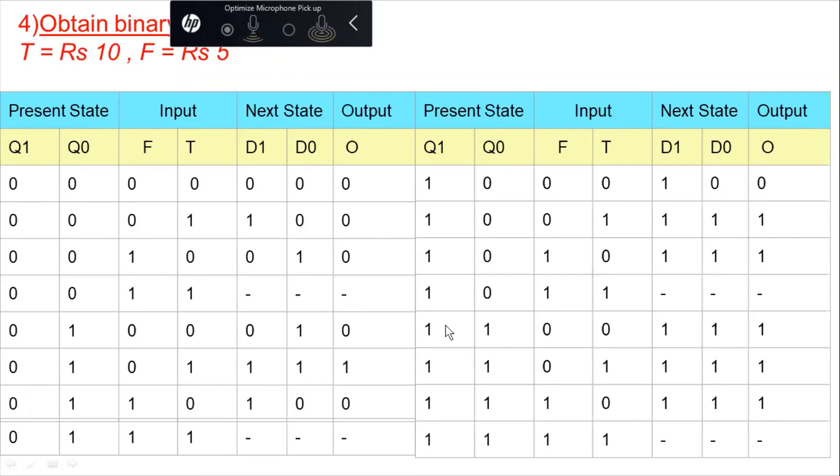Similarly, if we are at this present state of 15, that is 11, and we get input of 01, let's say over here, we get input of rupees 10, coin of 10, then our next state will remain same and our output will be 0.